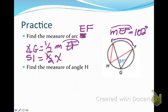Now let's find the measure of angle H. We'll notice that angle H intercepts arc EF just like angle G. So angle H is congruent to angle G. So angle H also equals 51 degrees.